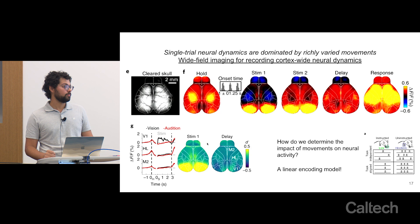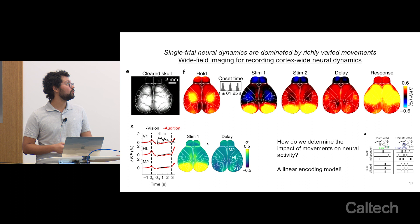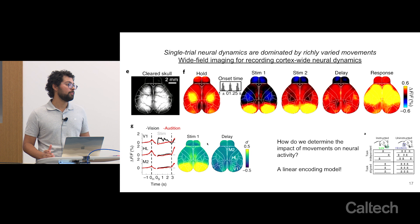A limitation of wide-field imaging: if activity is very sparsely distributed, you might not be able to pick it up. Wide-field imaging is mainly looking at bulk activity. Its advantage over other bulk activity measures like fiber photometry is the spatial coverage — you're recording over the entire cortex at the same time. Because of this concern about sparse activity, the authors of this paper also did two-photon imaging.